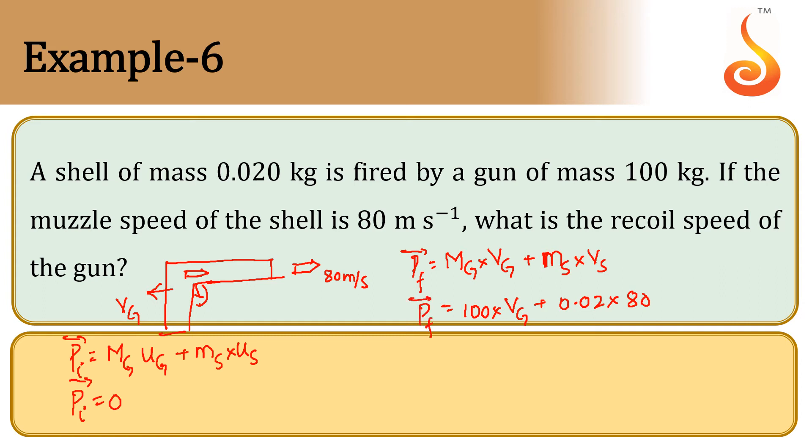Since the shell was fired due to internal mechanism, it is caused by internal forces. Therefore, the net momentum of the whole system is always conserved before and after the shell was fired. That means initial momentum equals final momentum, which can also be written as 0.